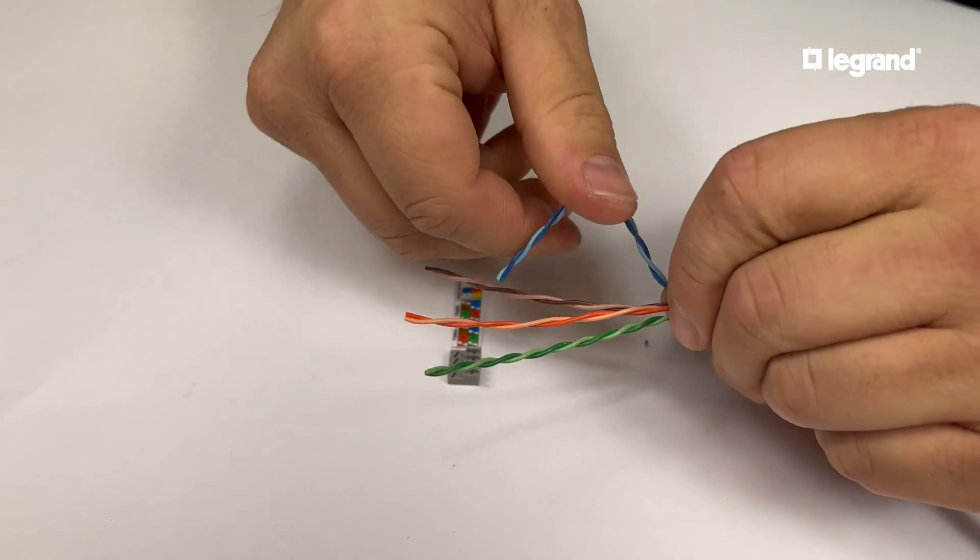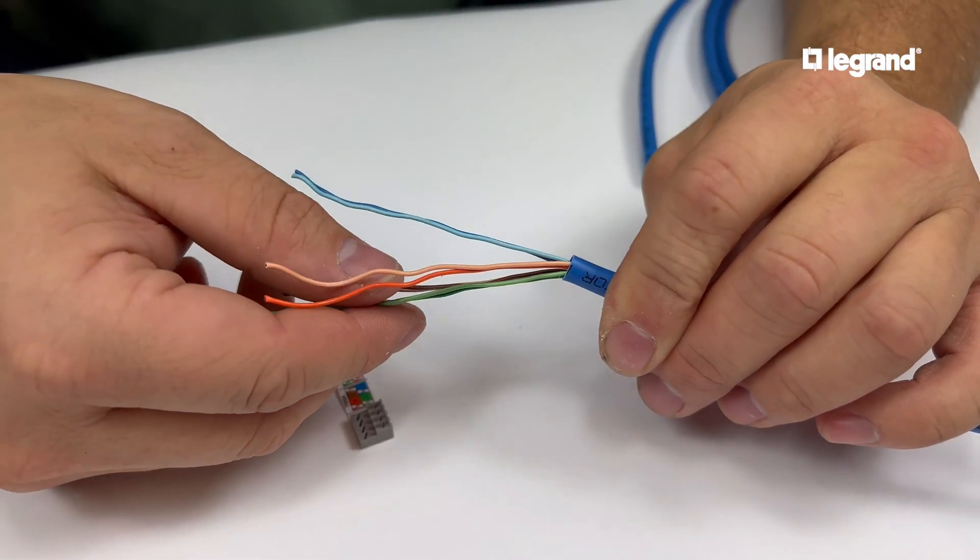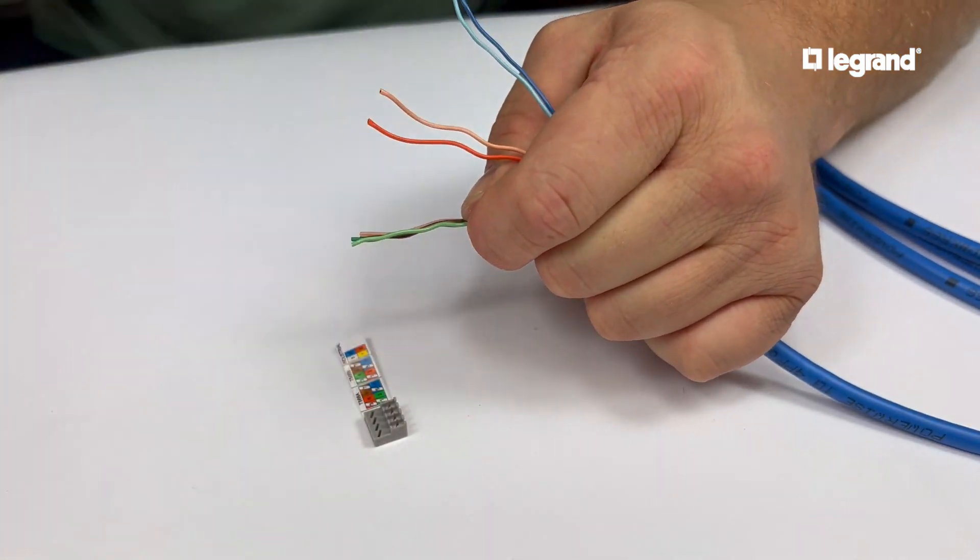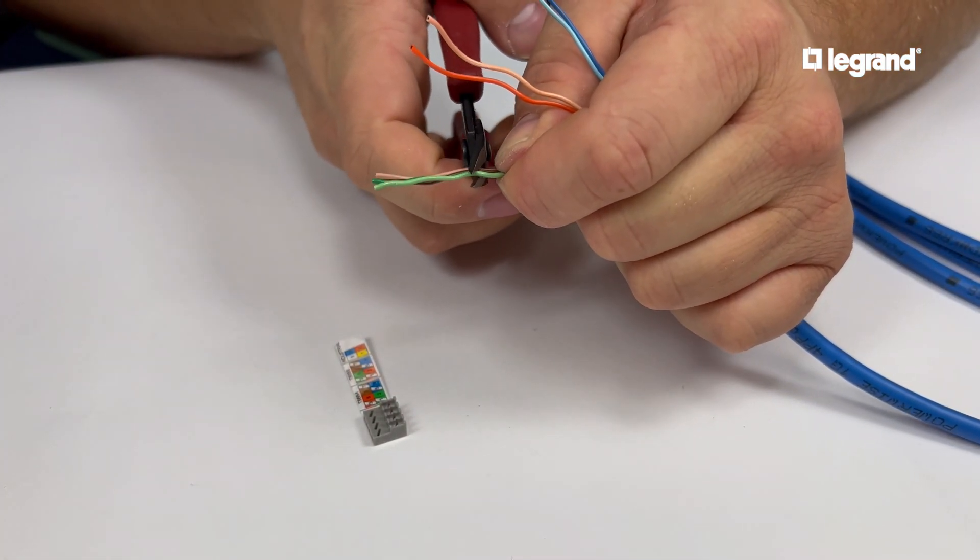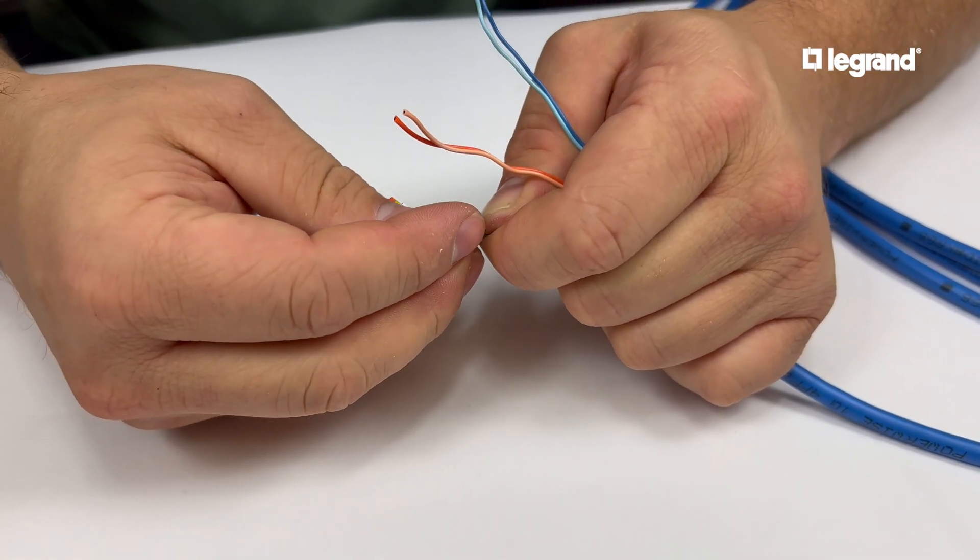Now, untwist your pairs and straighten out any bends in the wire. Identify the four wires that are going to be laced through the holes on the bottom of the wiring cap. Trim those wires at an angle. That'll make it easier to insert through the slots.